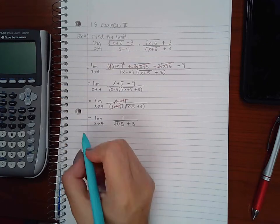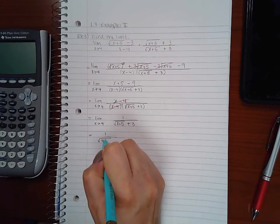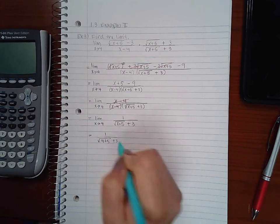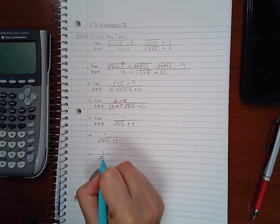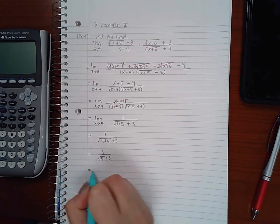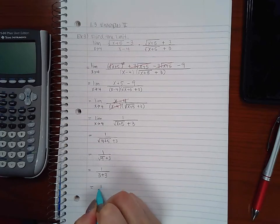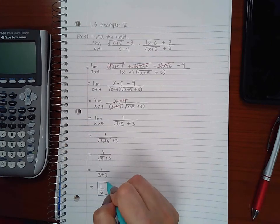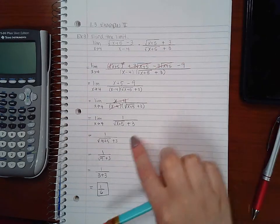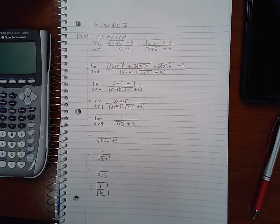Now I can try direct substitution. So now when I substitute that 4 in for x, I get 1 over the square root of 9 plus 3. The square root of 9 is 3 plus 3, so I get 1 over 6. So here we had to algebraically manipulate it before we could do direct substitution to come up with the solution.